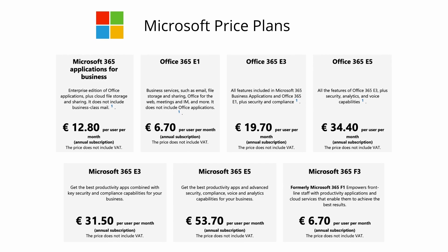Looking at Microsoft's plans, they break them down similarly: Microsoft 365 Basic, Standard, and Premium, plus Microsoft 365 Apps as a standalone OneDrive and SharePoint product — and Google now has a competing product for this. In the enterprise space Microsoft has E3, E5, and F3. Google and Microsoft are really on par now in terms of their plans, which makes it easier for customers coming from Microsoft to compare them on a like-for-like basis.